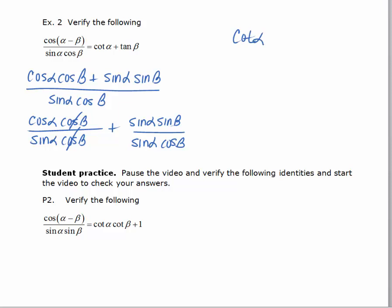And it would be plus. In the second term, the sine alphas cancel and you get sine beta over cosine beta, which is tangent beta. And we have verified this identity — the left-hand side is equal to the right-hand side.